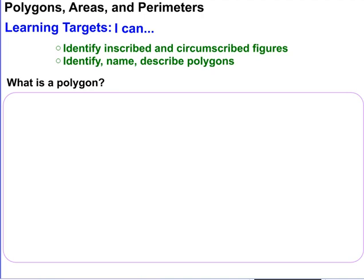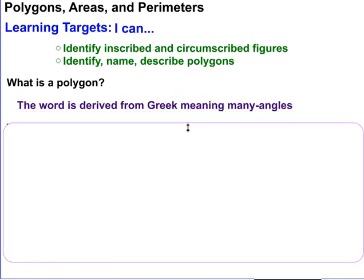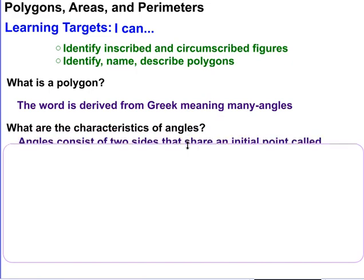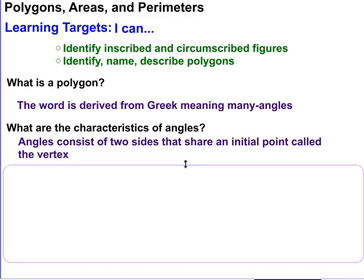So what is a polygon? You probably have heard that word before, and it actually comes from the Greek language, meaning many angles. And what are the characteristics of angles? Earlier in geometry, we learned that angles consist of two sides that share an initial point, and that point is called the vertex.